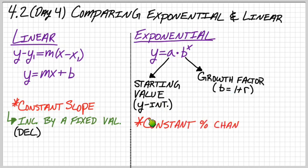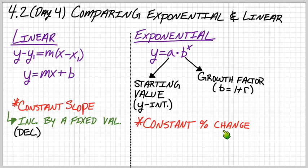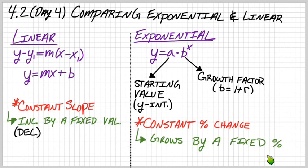For exponentials, instead of a constant slope like linear functions, they have a constant percent change. So they're either growing or decaying at a constant percent. That means it grows by a fixed percentage every time — it's multiplied by a fixed percentage every single time — or likewise, it could decay by a fixed percent every single time.